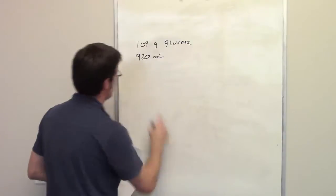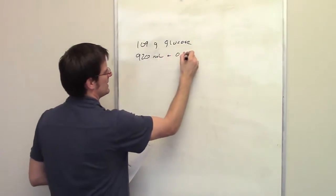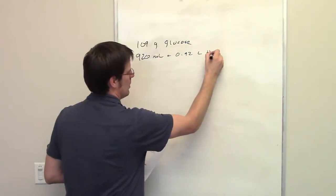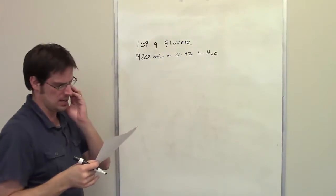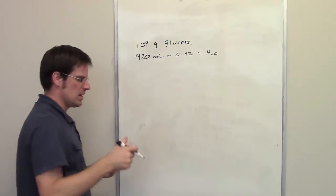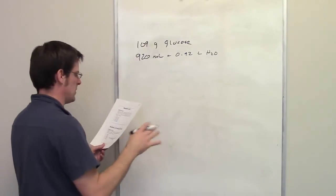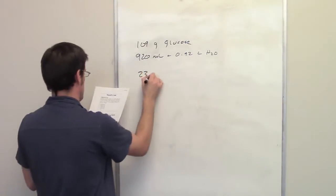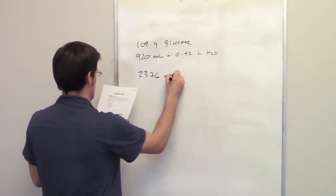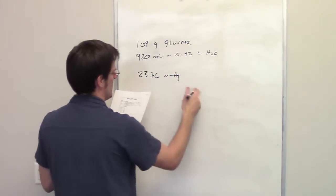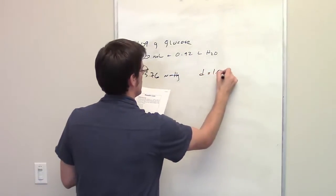I'm going to change that directly to 0.92 liters of water. The temperature is 25 degrees Celsius, and the vapor pressure of pure water is 23.76 millimeters of mercury. We assume that the density is equal to 1 gram per milliliter.